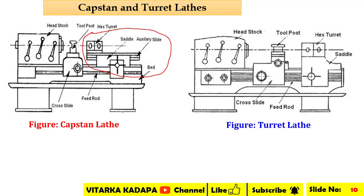When comparing the capstan lathe to the turret lathe, in the capstan lathe we have an auxiliary slide, with the saddle on top and a hexagonal turret on the top surface. This auxiliary slide is missing in the turret lathe. In the turret lathe, the saddle is present and the hexagonal turret is mounted directly on top of the saddle. Since the hexagonal turret is mounted on the saddle, the movement of the tool has a restriction.